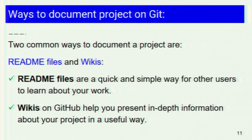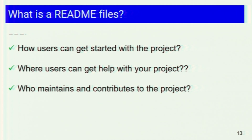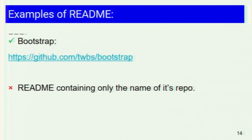There are two common ways to document a project on Git: README files and wikis. A README file is the first thing a visitor sees on any GitHub repository. Some READMEs are pretty good and give you a clear picture of the repository, while some have the least amount of information — just the name of the repository. A README typically includes what the project does, why it is useful, how users can get started, where users can get help, who maintains and contributes to the project, and other minimal information.